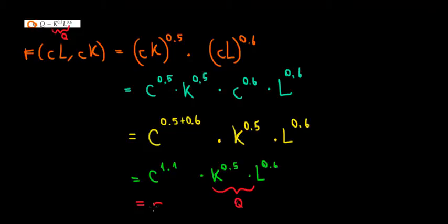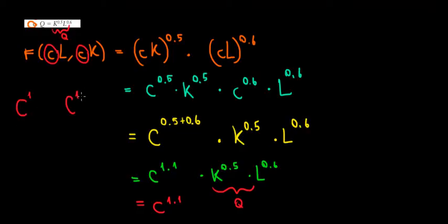The original Q increased by a proportion of C to the power 1.1, whereas the inputs increased by a proportion of C only — C to the power of 1. Since the output increases by C^1.1, which is raised to a higher power, the increase in output is greater than the increase in input. So this is an example of increasing returns to scale.